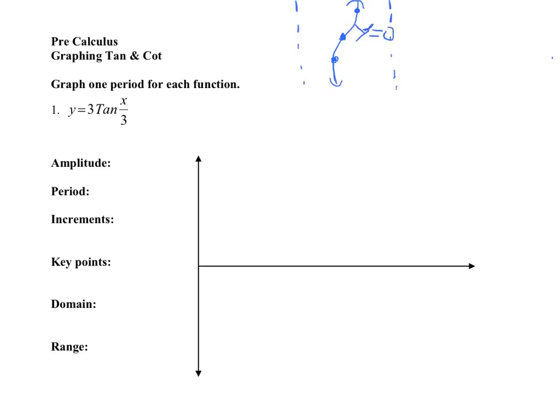Okay, and then to get the lower point and the higher point, we have to use the amplitude, the amplitude's three. The amplitude basically tells us how quick does the S curve go up left to right. Well, since the amplitude's three, what that means down here, this is negative three, and here, this is y equals positive three.